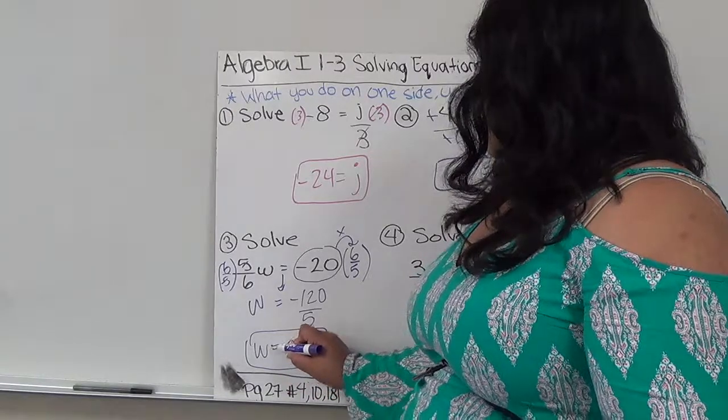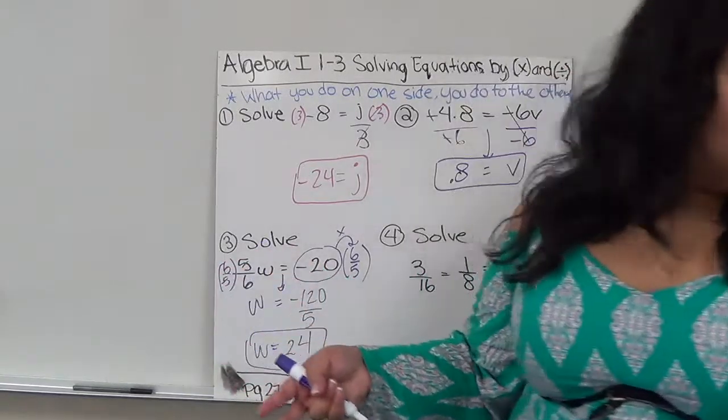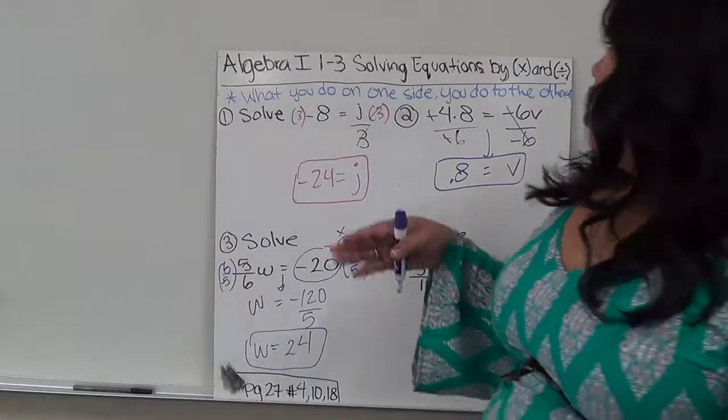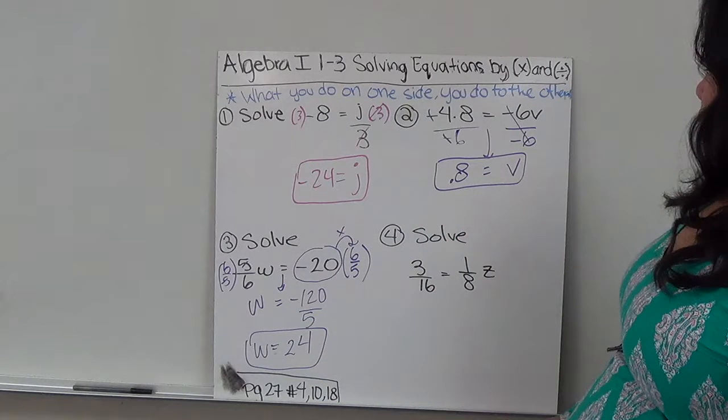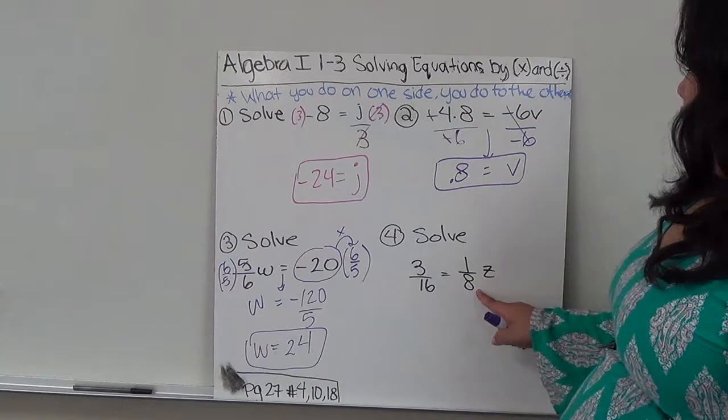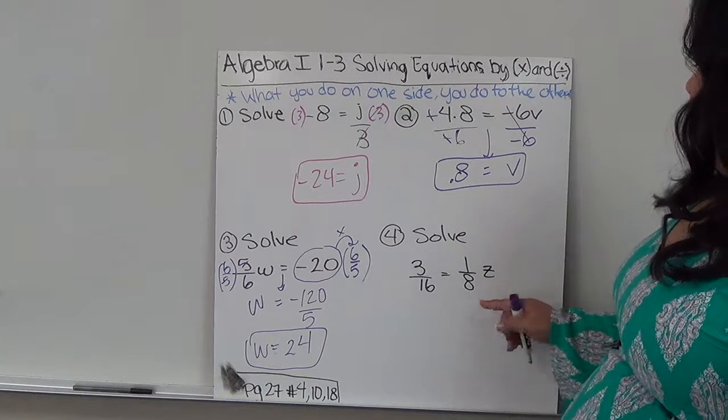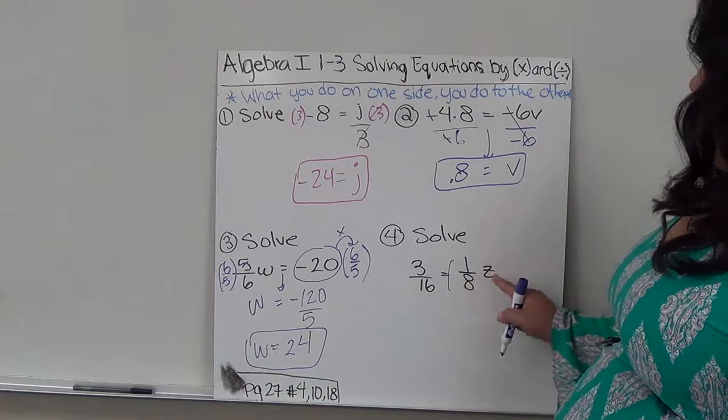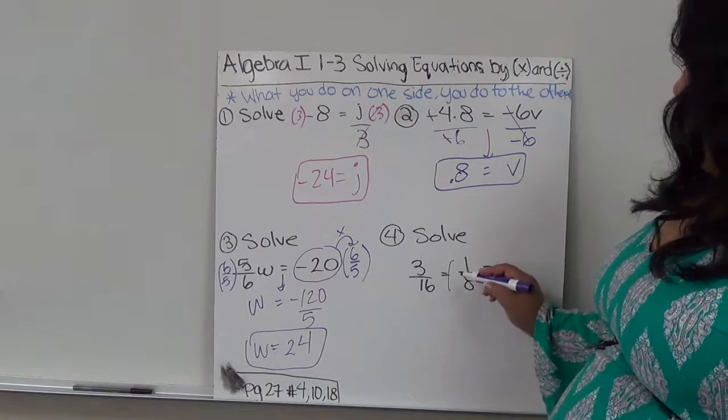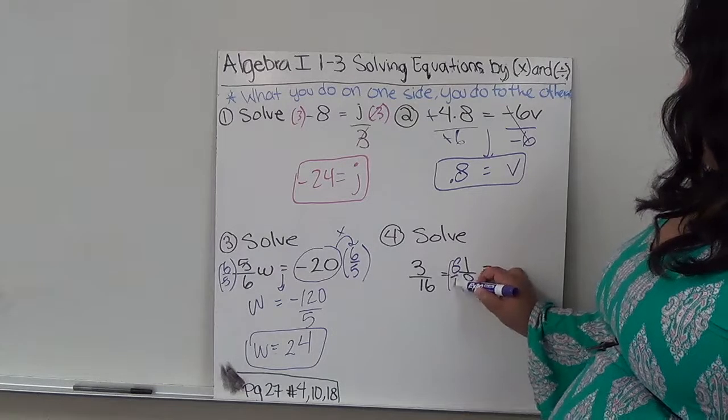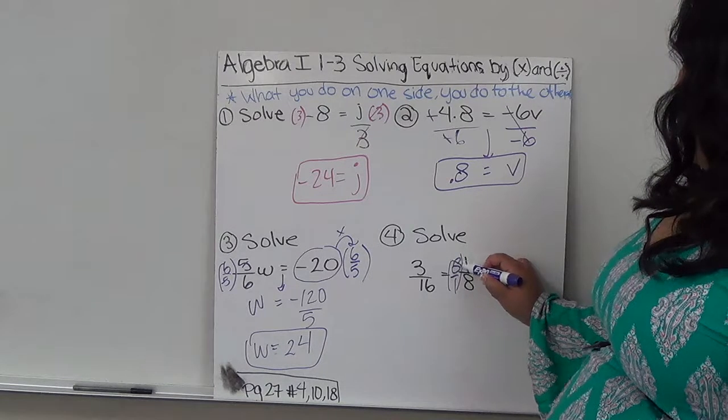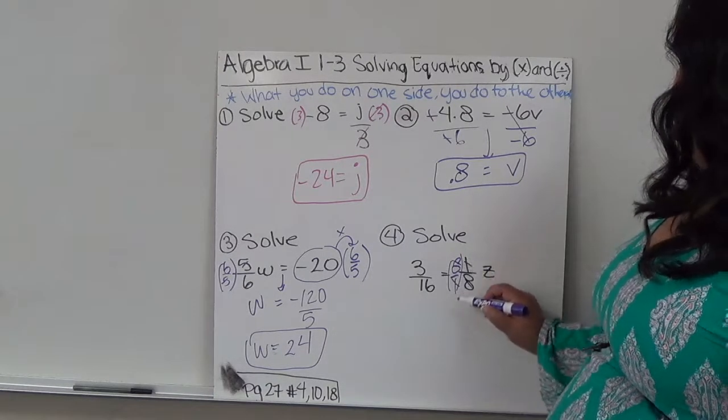So whenever I have a fraction, the opposite is just to flip the fraction and I just keep my chant. What I do to one side, I have to do to the other. So in this case, same as here, 1 over 8, I have to get rid of it by multiplying it. I know it's being multiplied by z, but if I'm dealing with fractions, I'm going to multiply nonetheless and I'm going to do 8 over 1. This and this cancel out and this and this cancel out.